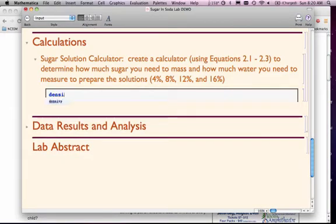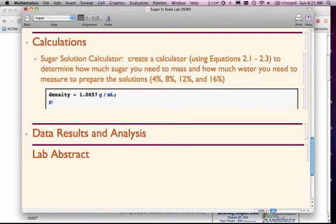So what I need to know, I need to know the density of the 16% solution, and that's going to be 1.0657 grams per milliliter. I'm going to suppress that because I don't need to see that number. The percentage that I'm calculating here is 0.16, and notice I've changed that 16% into the fraction form.